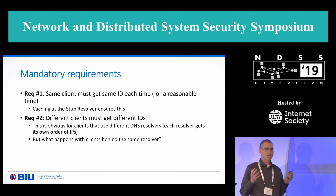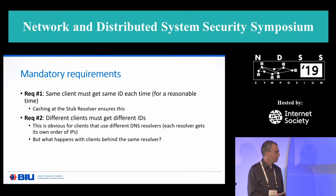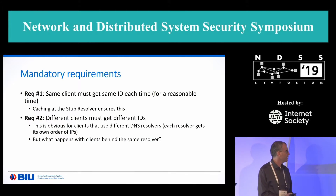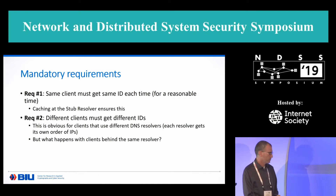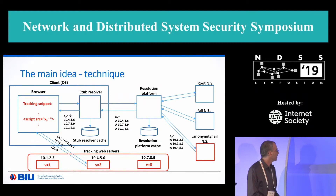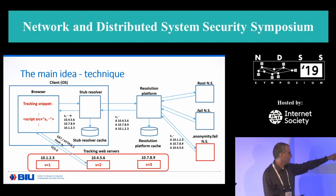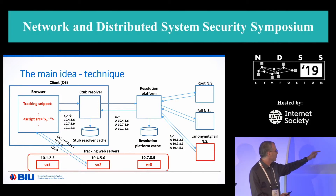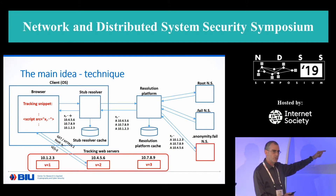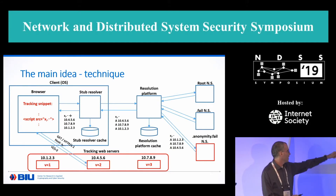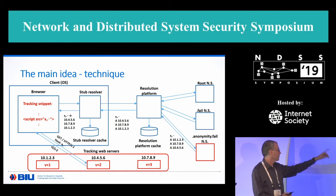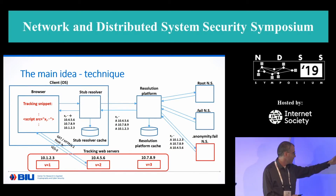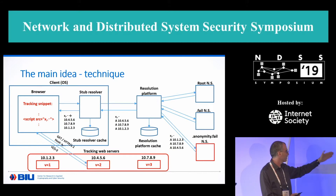So what are the two obvious requirements from a tracking technique like this? The first requirement is that the same client must get the same ID each time, at least for a reasonable time. This is handled by the fact that the stub resolver caches this list and retains its order. So on subsequent invocations of the snippet, the snippet will ask the stub resolver, and the stub resolver will answer from the cache with the same list in the same order. So the browser will keep accessing 10.4.5.6 and will keep getting V equals 2.